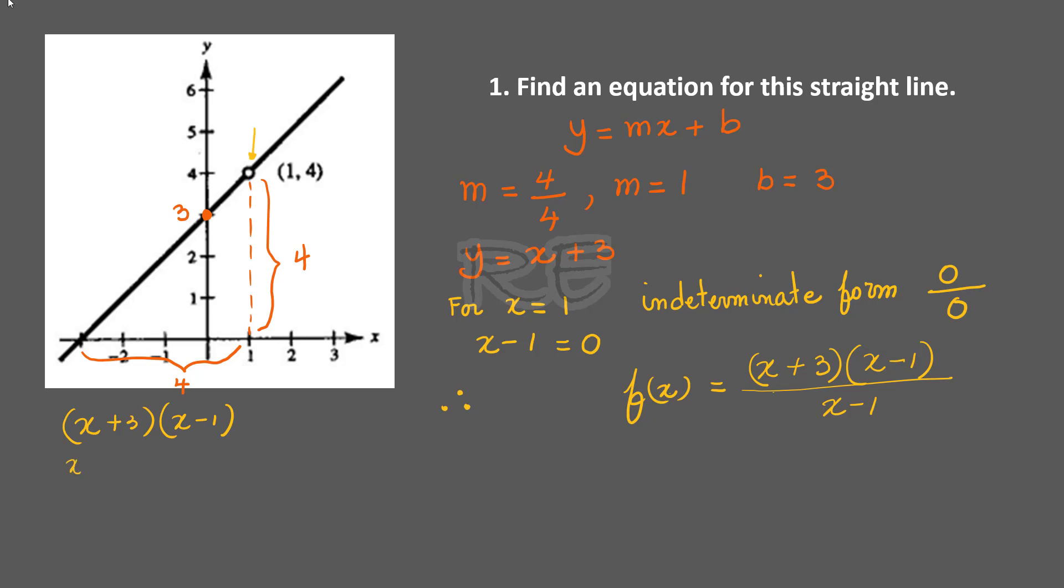x plus 3 times x minus 1 will be x squared, 3x minus x, 2x, x squared plus 2x, and 3 times negative 1, negative 3. So our final answer will be x squared plus 2x minus 3 divided by x minus 1.